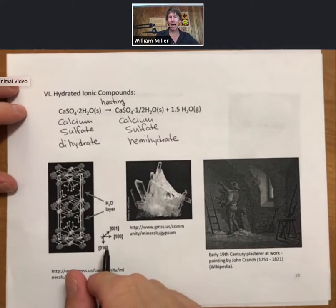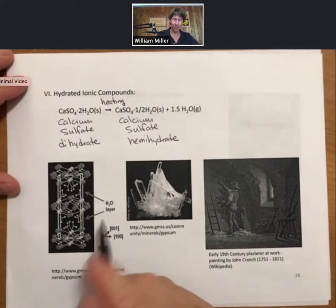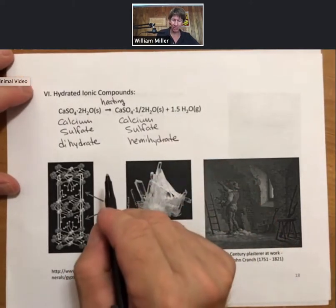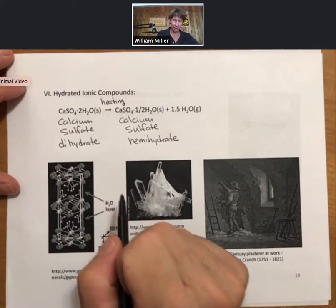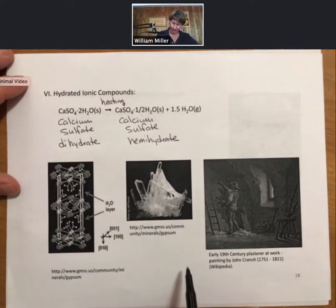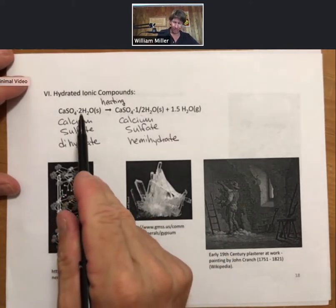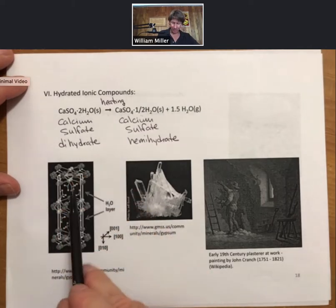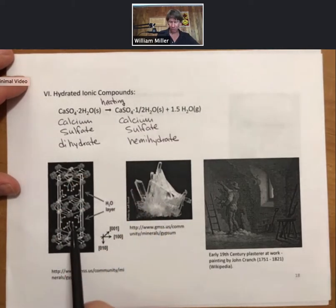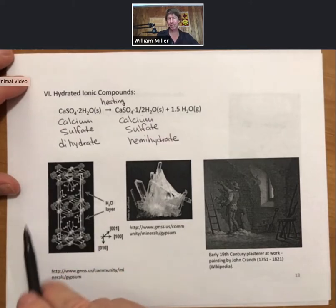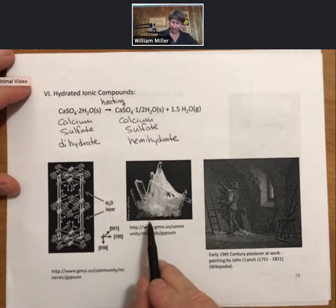And this would not be a good way of writing the balanced reaction, because it does have a fraction, and fractions should be cleared in balanced reactions. Now, the only difference between these two compounds is the number of waters that are trapped between the calcium sulfate layers.